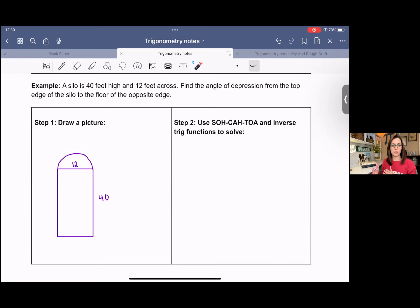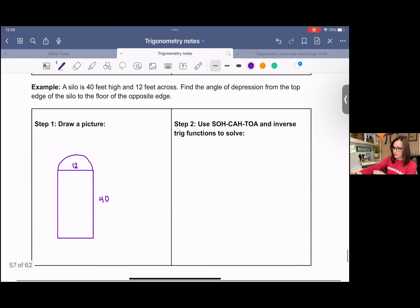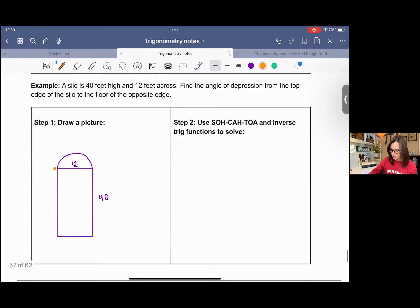It says find the angle of depression from the top edge of the silo. So that's going to be right here. That's kind of our line of sight to the floor of the opposite side. So that kind of forms this angle there. And then if we follow that line of sight, this here is our angle of depression. And that's now you can see why I put the triangle labels on that side, because we're looking for this angle here that it forms with the floor.